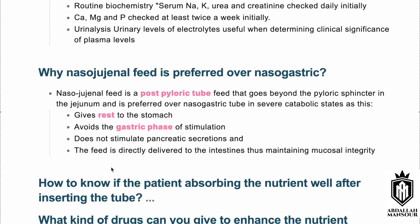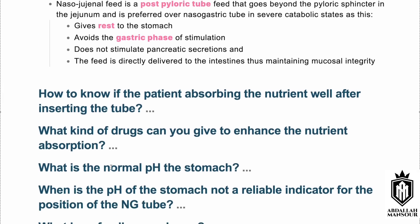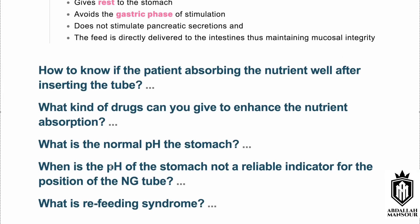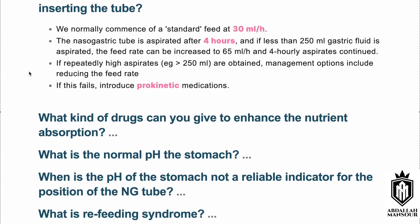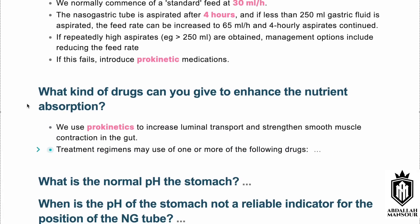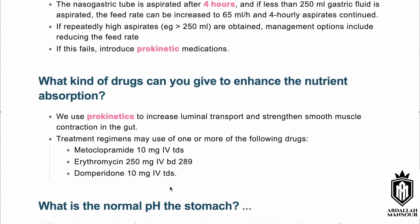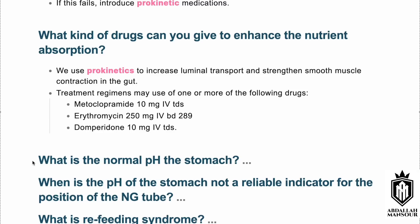To assess whether a patient is absorbing nutrients well, start the feed at 30 ml/hr. After four hours, measure the aspirate. If it is less than 250 ml, increase feeding to 65 ml/hr and continue measuring the aspirate every four hours. If the aspirate exceeds 250 ml, consider prokinetic drugs — agents that enhance gastric contractility — such as metoclopramide, erythromycin, or domperidone.